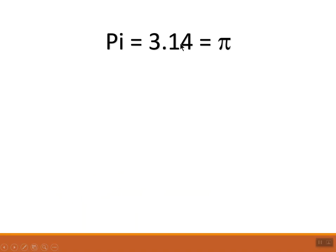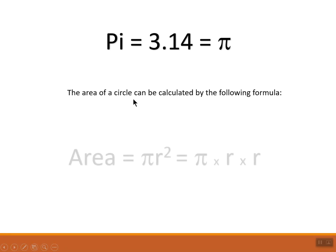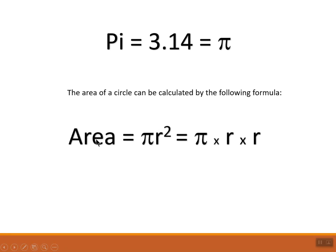Instead of using the Greek symbol, we might also refer to pi using the letters pi. The area of the circle can be calculated using this formula. The area is equal to pi r squared. R squared in this case is simply r times r. So it's pi times r times r, and r is the radius of the circle.